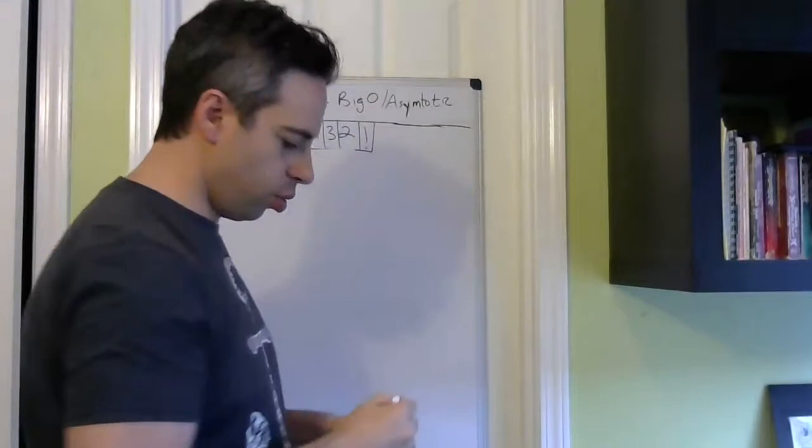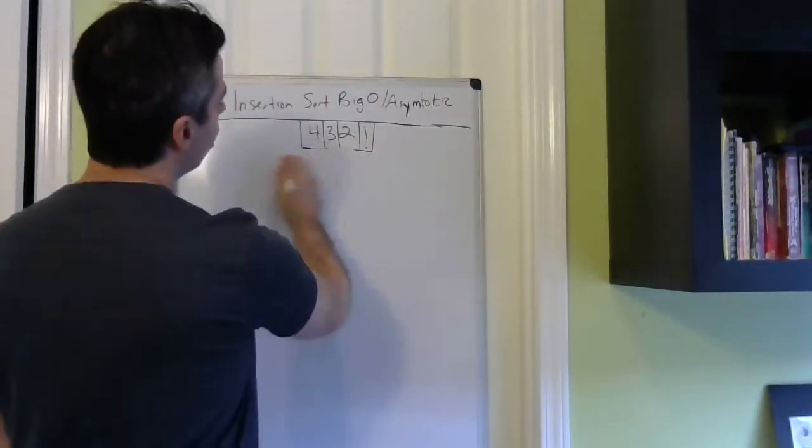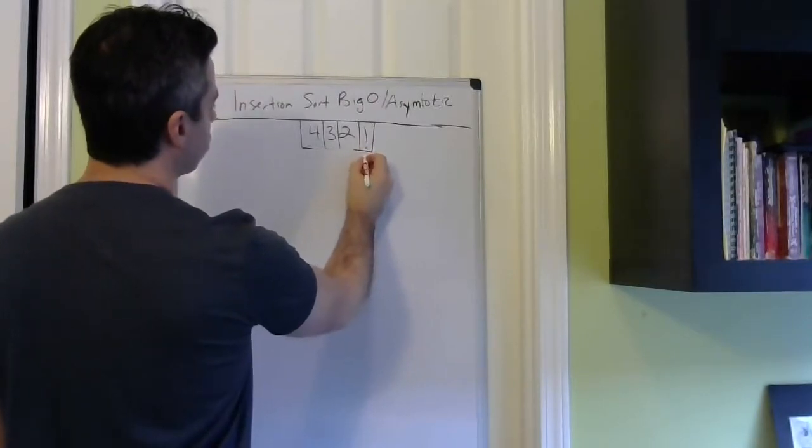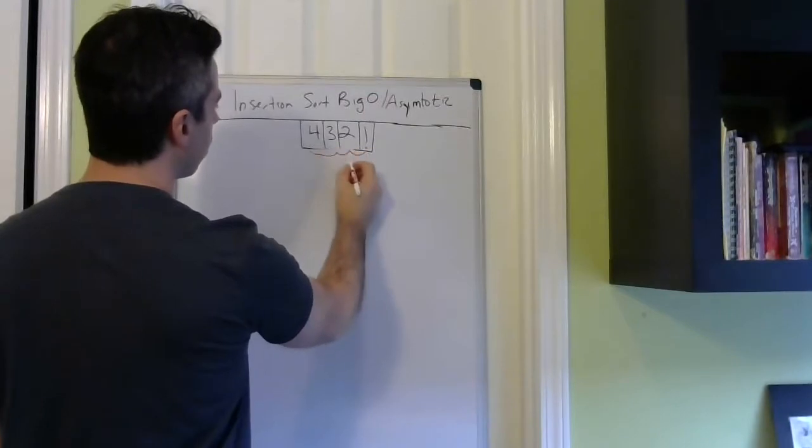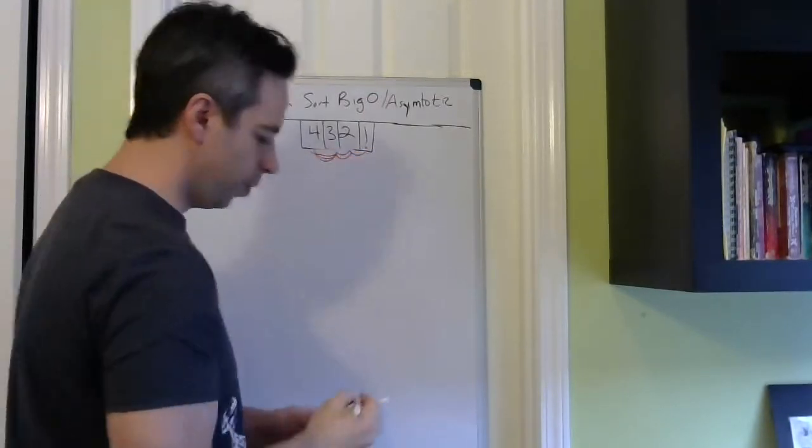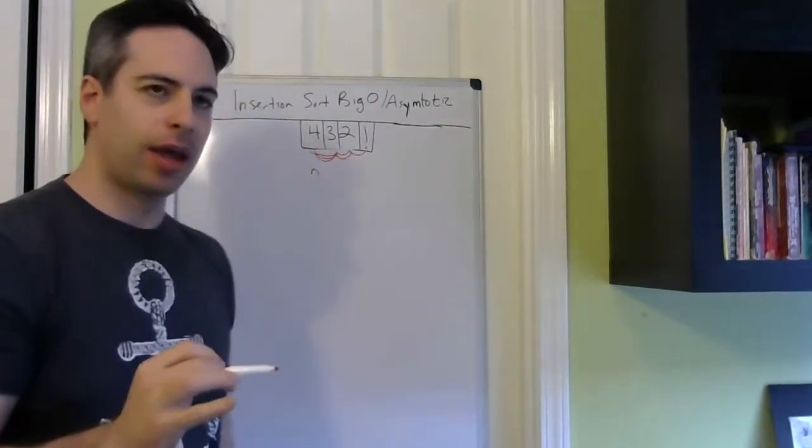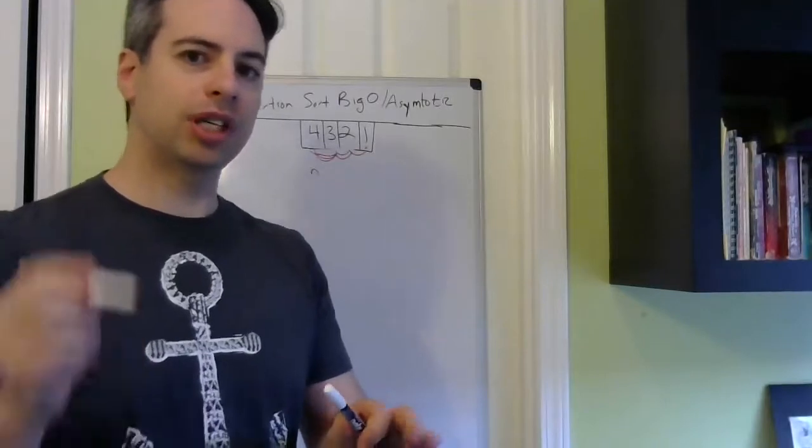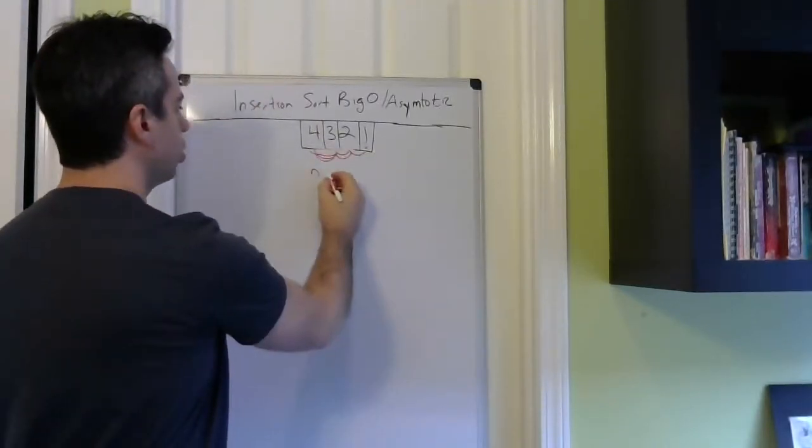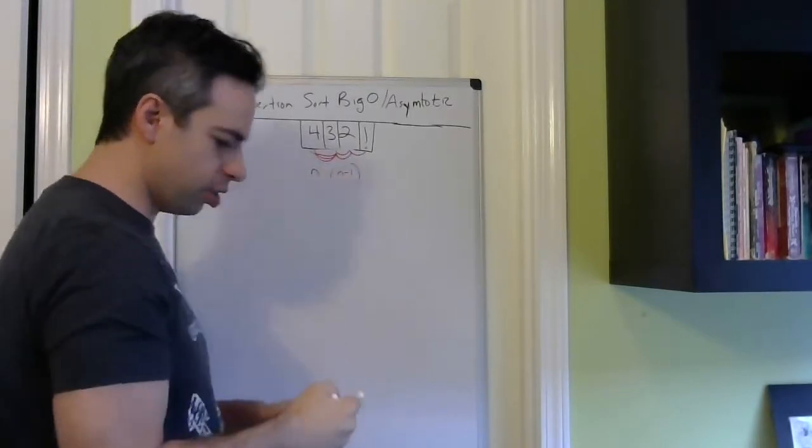As you know, in insertion sort, you're comparing to the left. So from the far right, I need to potentially compare 1, 2, 3 times, here 1, 2 times, here 1 time. So I have my n elements, and I'm not comparing them to each one of themselves, I'm comparing it to the rest of this list. So n times n minus 1 is where we're going to start.